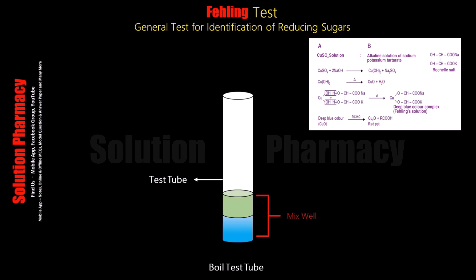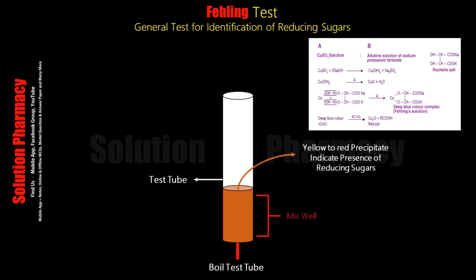After boiling the contents of the test tube for about five to ten minutes, if we observe a brick red color precipitate, it means reducing sugar is present in our sample. If no yellow to red color precipitate forms, it means reducing sugar is absent.